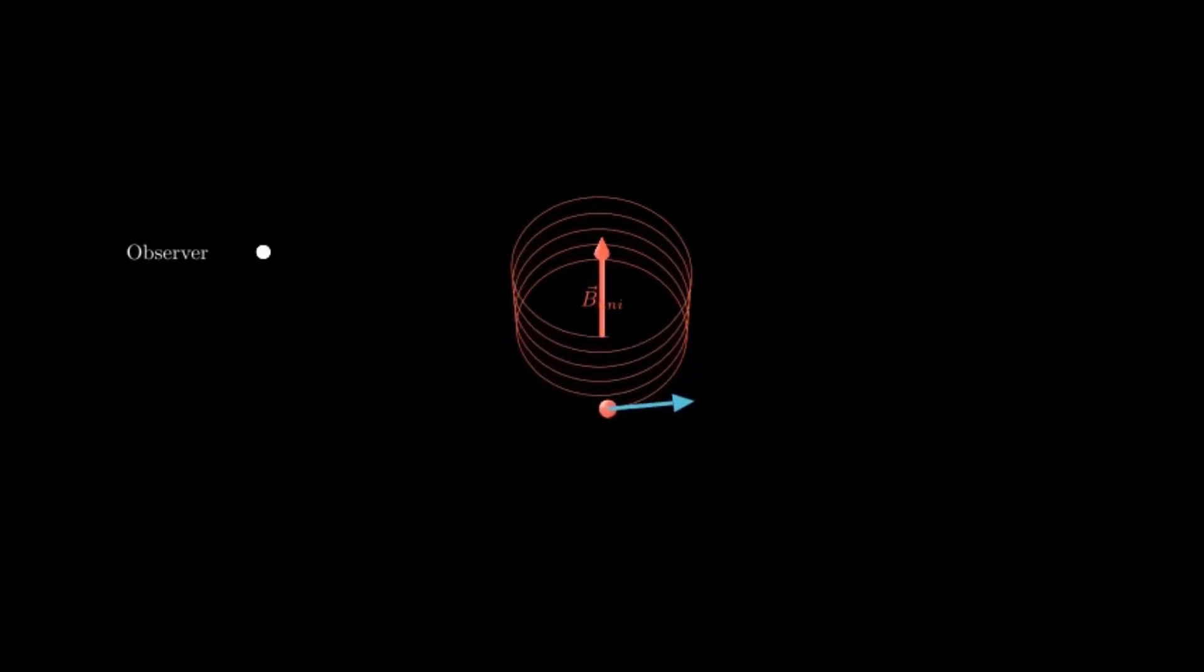This allows us to use these two cases of V parallel and V perpendicular as a basis for arbitrary velocity. The perpendicular velocity creates a circle in the perpendicular plane. When you introduce the parallel velocity, this stretches it out into a helix.